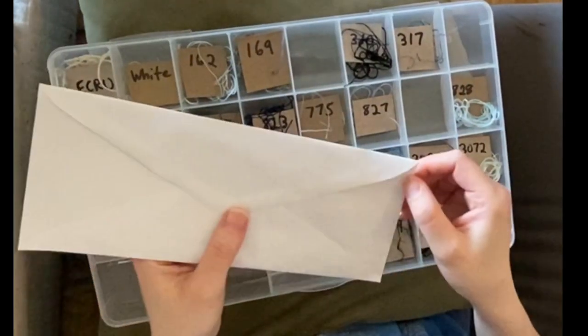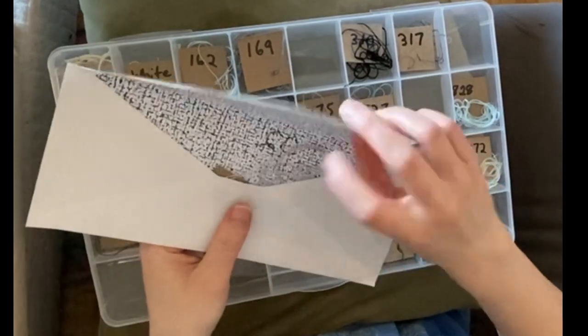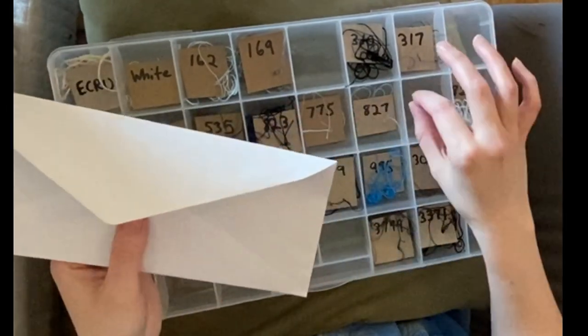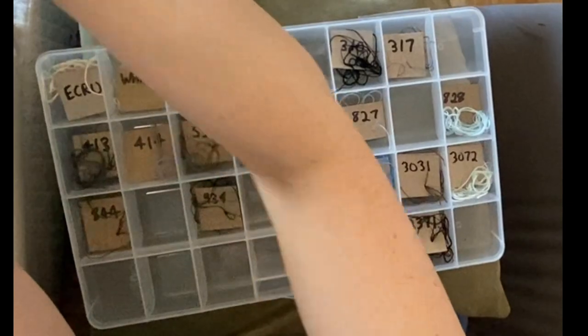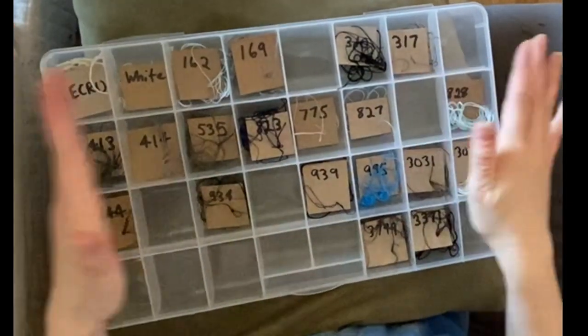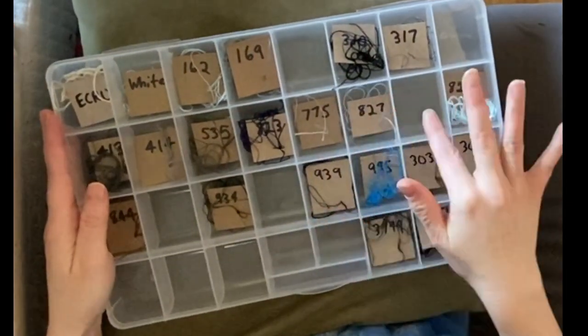So when I decide to pull a color and use it in my working tray, I take out the little thread card and the thread that I'm going to need and I put it into one of these slots, and then that way I know what color is in which slot obviously.